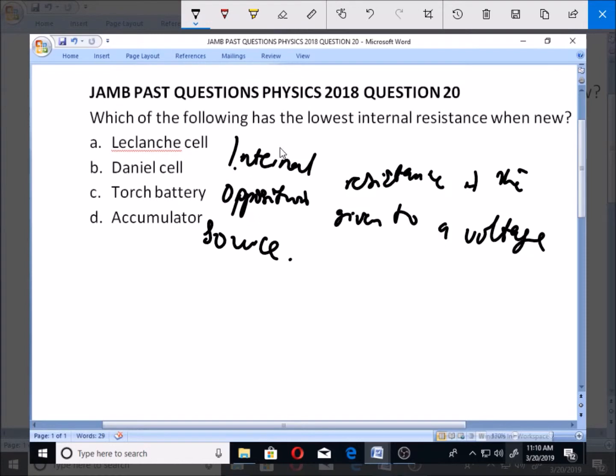Now, in order for you to be able to pick out the internal resistance, you're going to ask yourself which of these cells or batteries or charge sources produce the highest charge. You find out that that is likely to be the one that has the least internal resistance.